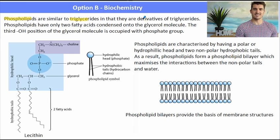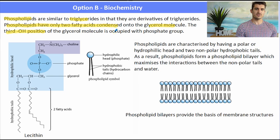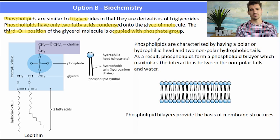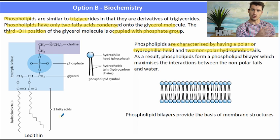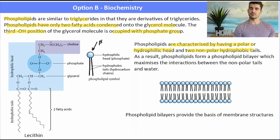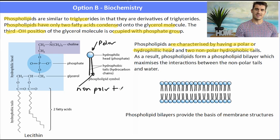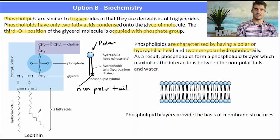A phospholipid is similar to a triglyceride — they are derivatives of triglycerides. A phospholipid has two fatty acids condensed onto the glycerol molecule, but the third and final position is occupied by a phosphate group attached to one of the carbons in the glycerol. Phospholipids are characterized as having a polar or hydrophilic head and two non-polar hydrophobic tails. Hydrophilic means attracted to water; hydrophobic means not attracted. As a result, this gives what we call a bilayer — if we have a sample of a phospholipid in water,